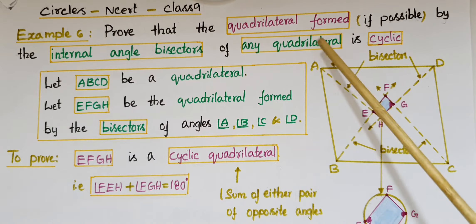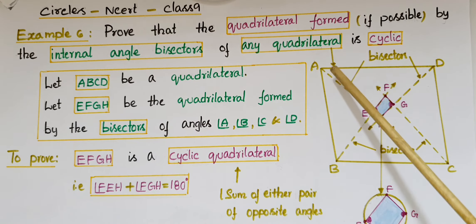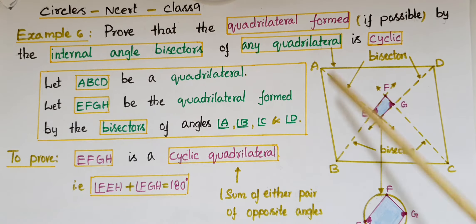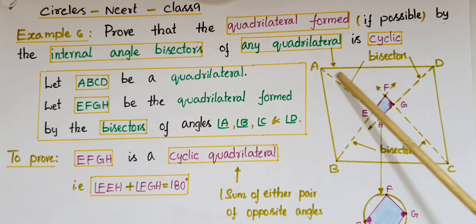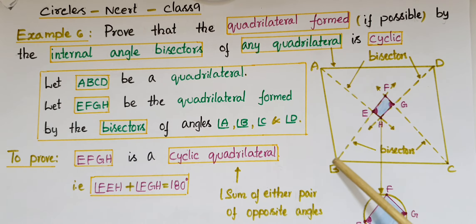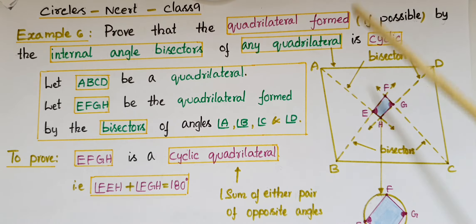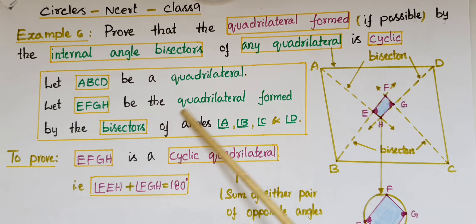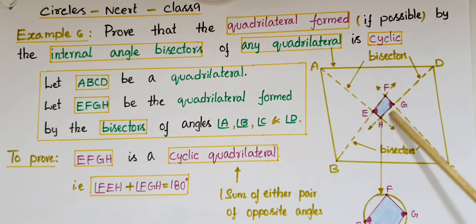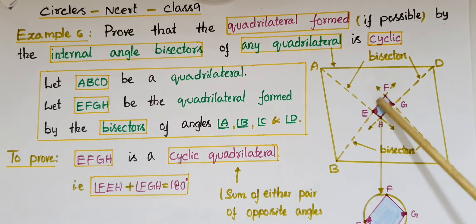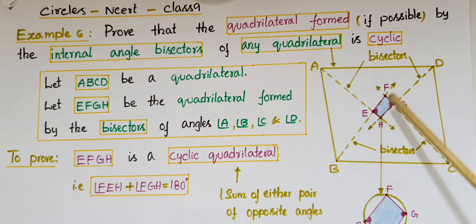Let ABCD be any quadrilateral. If you draw the internal angle bisectors, this is the bisector of angle A, this is the bisector of angle B, and these two lines are bisectors of angle C and angle D. Let EFGH be the quadrilateral formed by the bisectors of angle A, angle B, angle C, and angle D.